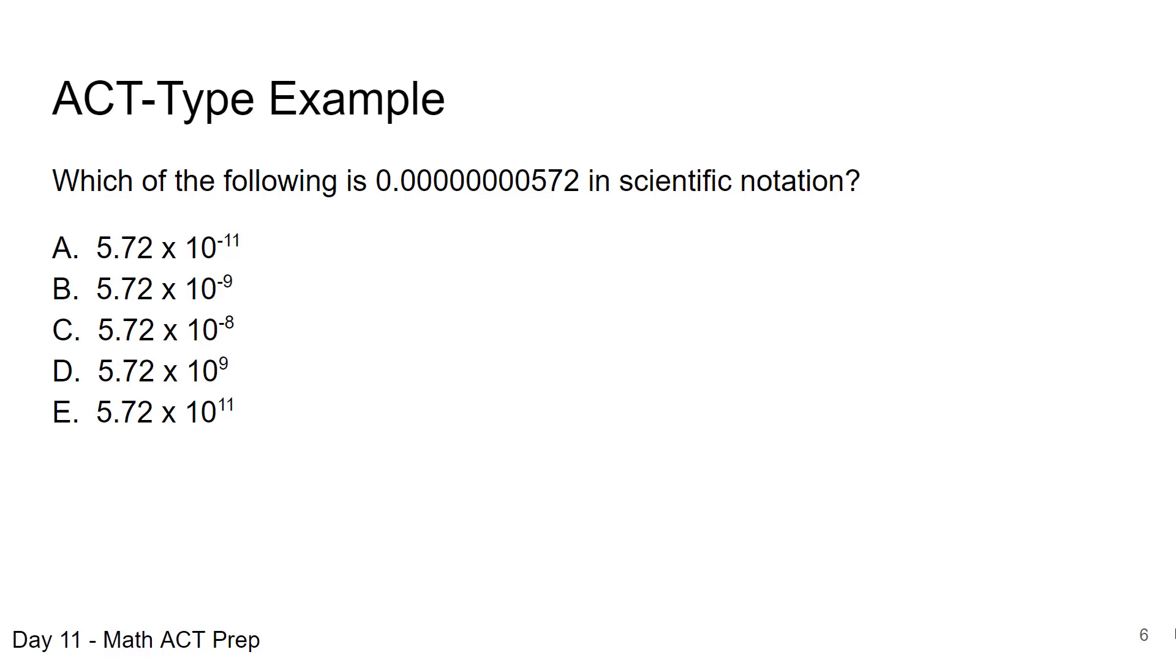So we're asking which of the following is this decimal number in scientific notation. So we have quite a few zeros after the decimal point. It's a small number, so that's going to be my first clue. I'm going to be looking for a negative exponent, because it's a decimal point, it's less than 1. So I can already eliminate choices D and E, but how many places do we need to move that decimal point? And as you can tell in choices A through C, all of them have that first value the same, the 5.72. The only difference in those three choices is what the value of the exponent is on the 10.